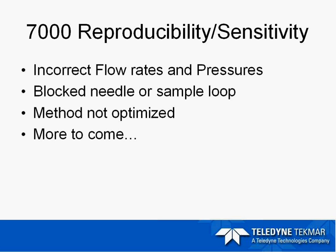Many problems for reproducibility and sensitivity on the 7000 can be resolved by checking the flow rates, pressures, and checking the system for leaks. Sometimes it can be a problem with a heated zone, so it is important to go through the self-test as well as checking our standby flow rate, our static vial pressure, and our vial pressurization. A blockage in the needle or sample loop can also cause reproducibility problems — sometimes the butyl rubber septa can cause blockages in the sample needle. You can use methanol to flush the needle out or sonicate it. Also check whether your method is optimized for temperature settings and equilibration time.